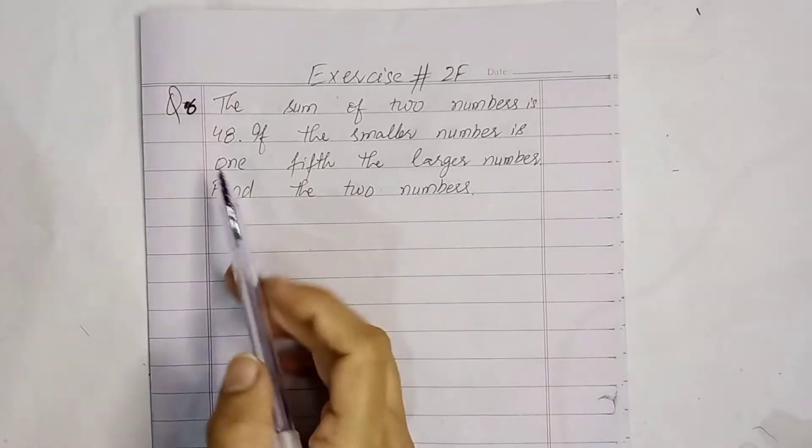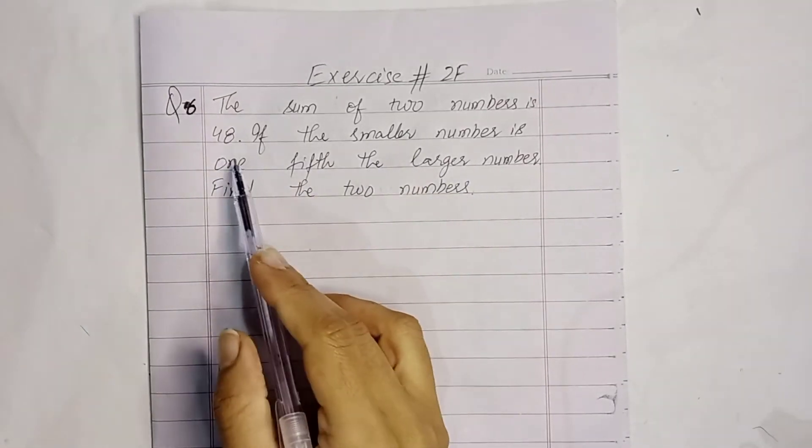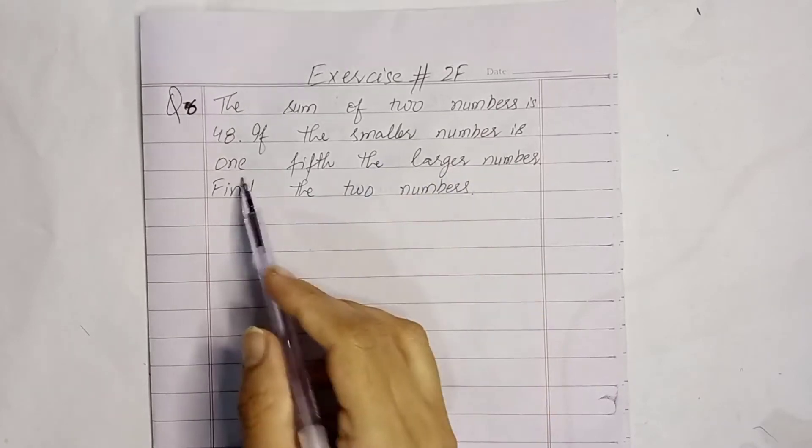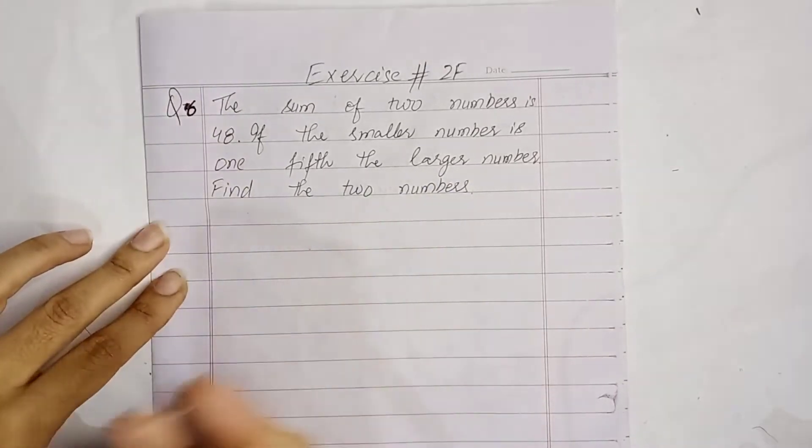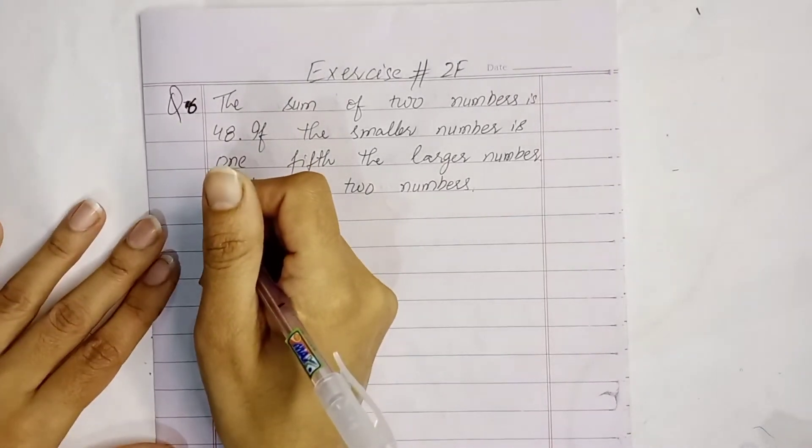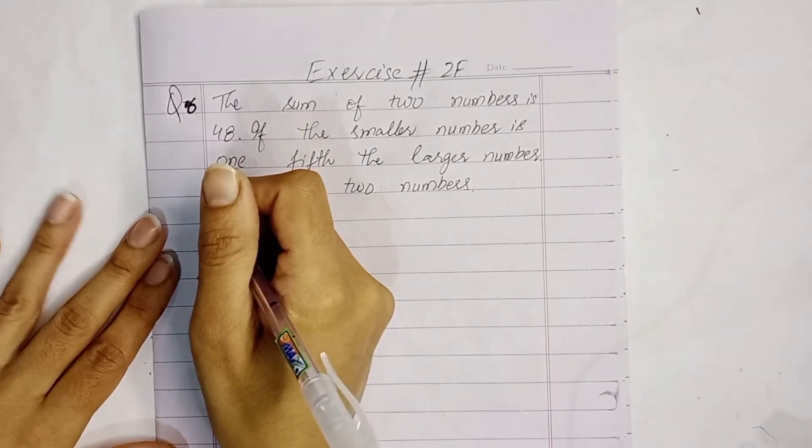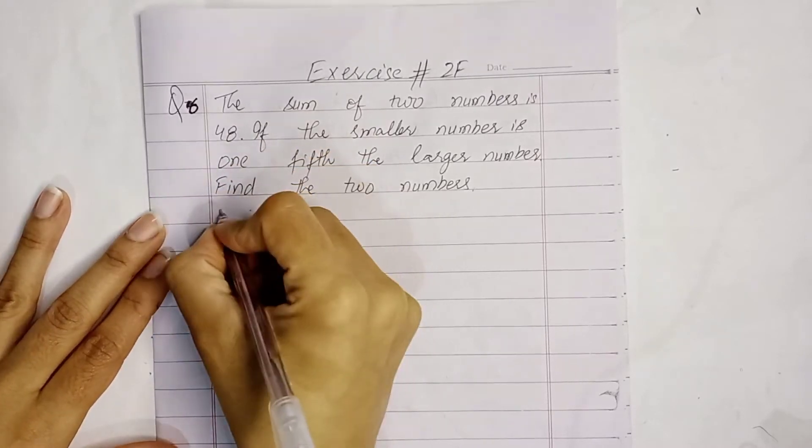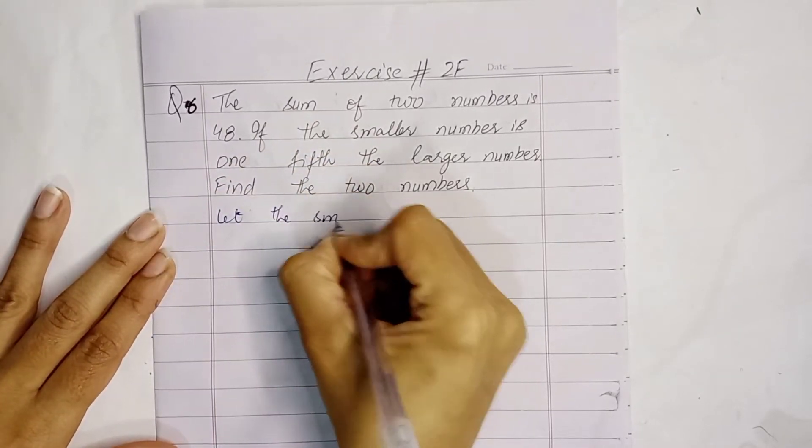Now students, question number 6. The sum of two numbers is 48. If the smaller number is 1/5th the larger number, find the two numbers. Let 1 number be x and 2 number be y.